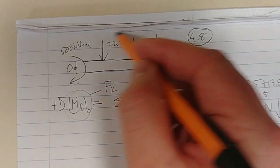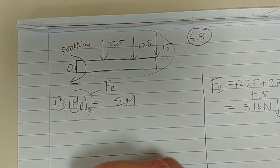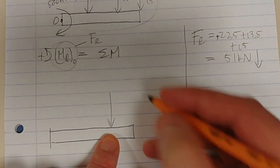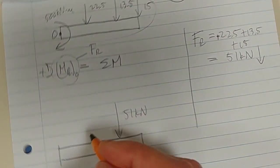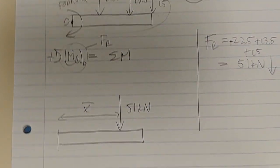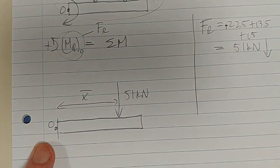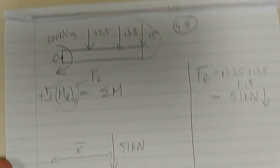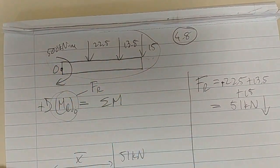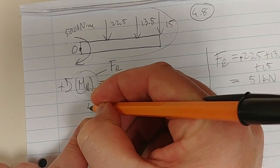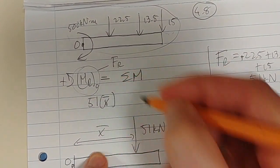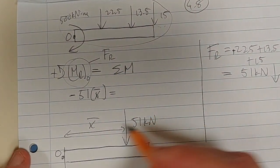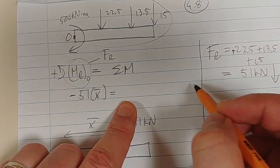This is now our original system, and we now want a single system with a force acting. That force is 51 kilonewton acting down, and now we want to determine the distance that force acts from that point. How do we do it? The moments. The moment due to this resultant force should equal the moment due to all the original forces plus existing couple moments. We've got 51 times that x on the left-hand side equals now the sum of all the moments.